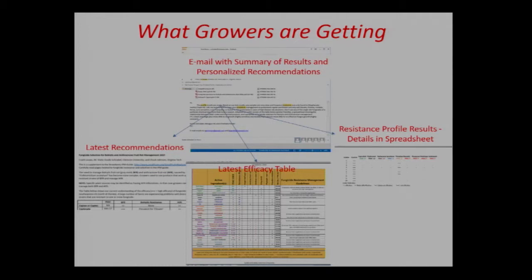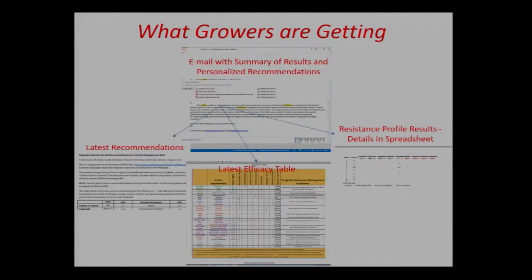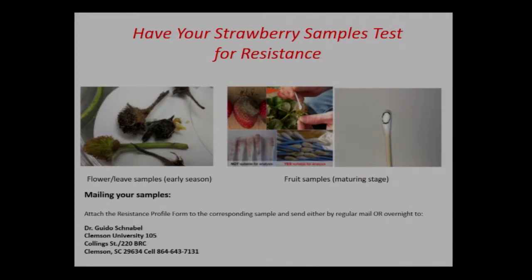The latest recommendations and efficacy table — not only for gray mold control but also for other diseases — include different active ingredients as well, with resistance profile results detailed in a spreadsheet. If you have been taking advantage of this monitoring program, keep doing that. This is probably the last year the service is offered for free; after this year, the program will likely not continue. If you want your strawberry samples tested for resistance, send your flower, dead flower, or leaf samples to Clemson. Later in the season, if you want to test fruit samples, you can collect spores using a swab from the fruit and send the swabs to Clemson University. Turnaround is usually about seven days after they receive your samples.